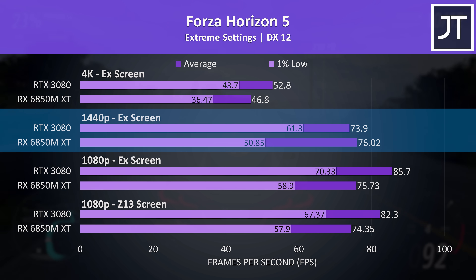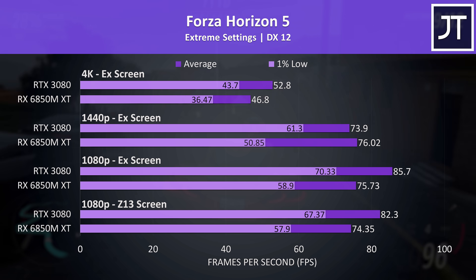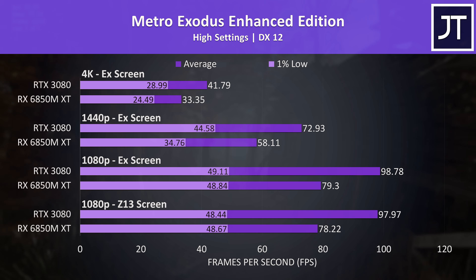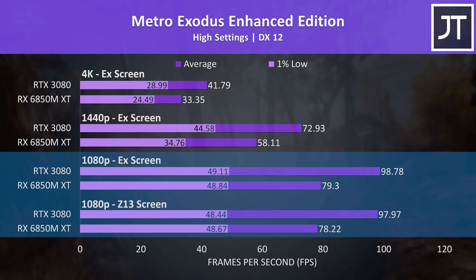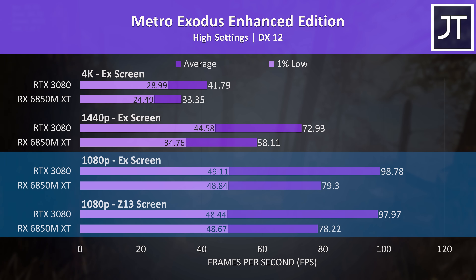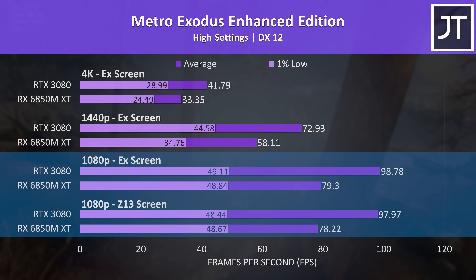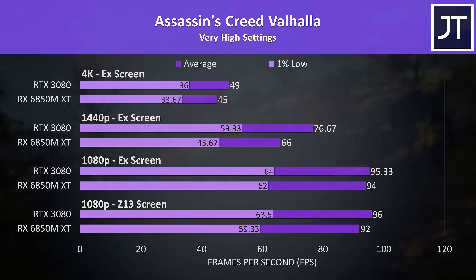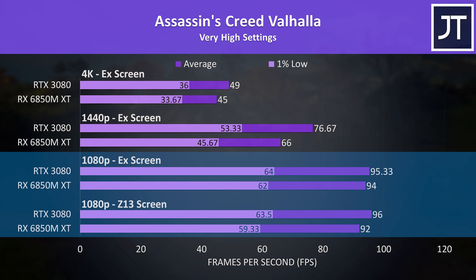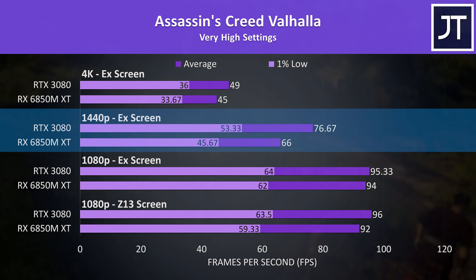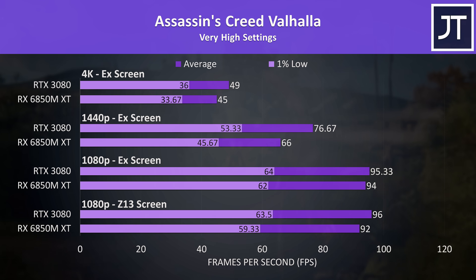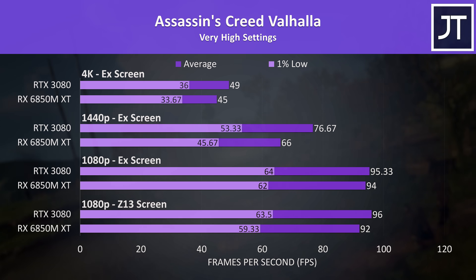Forza Horizon 5 was actually ahead on the 6850M XT at 1440p but not at any other resolutions, though the 1% low from the 3080 was still quite a bit higher. Metro Exodus Enhanced Edition was better on the 3080 at all three resolutions — 25% ahead in average FPS at 1080p with about the same lead at 1440p and 4K. Assassin's Creed Valhalla was quite similar at 1080p, with the 3080 holding a 16% lead at 1440p and 9% at 4K. This is a game I've found to favor AMD in the past, but despite this the 6850M XT was never ahead in any of these tests.